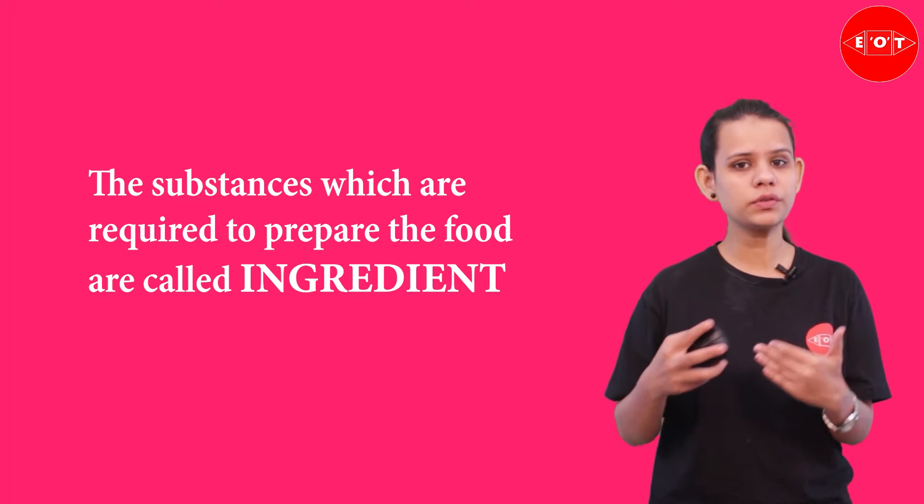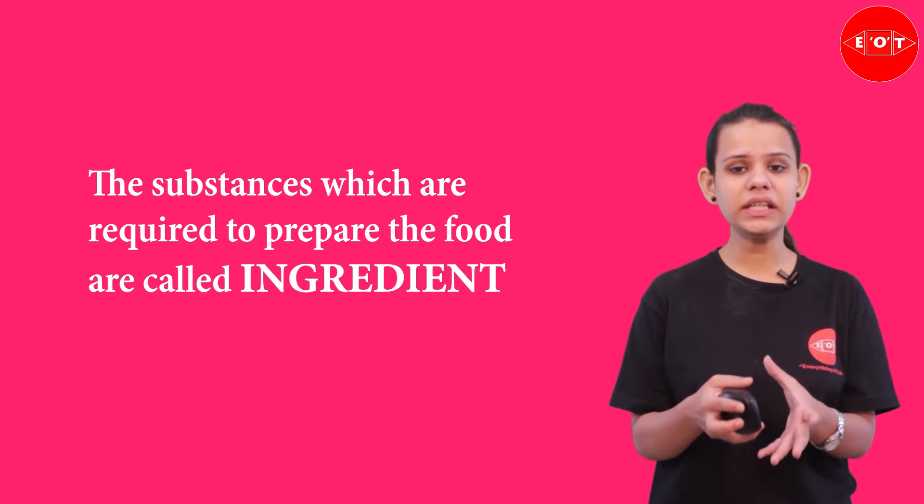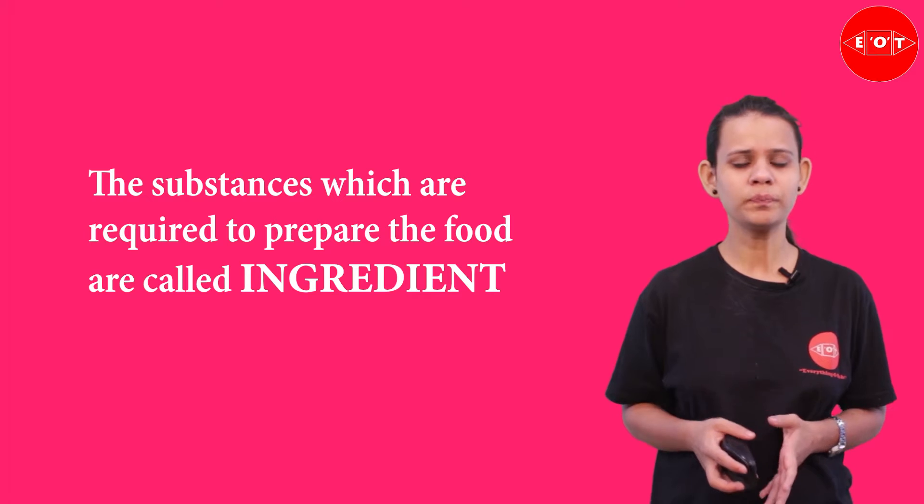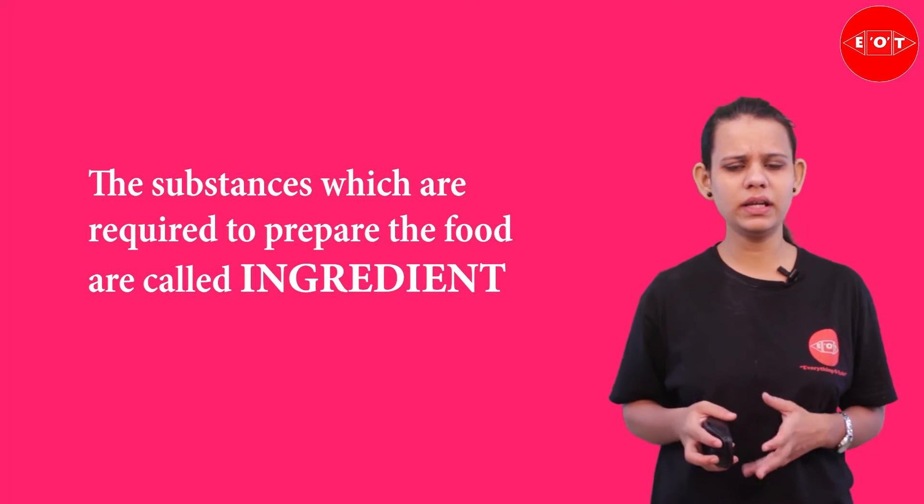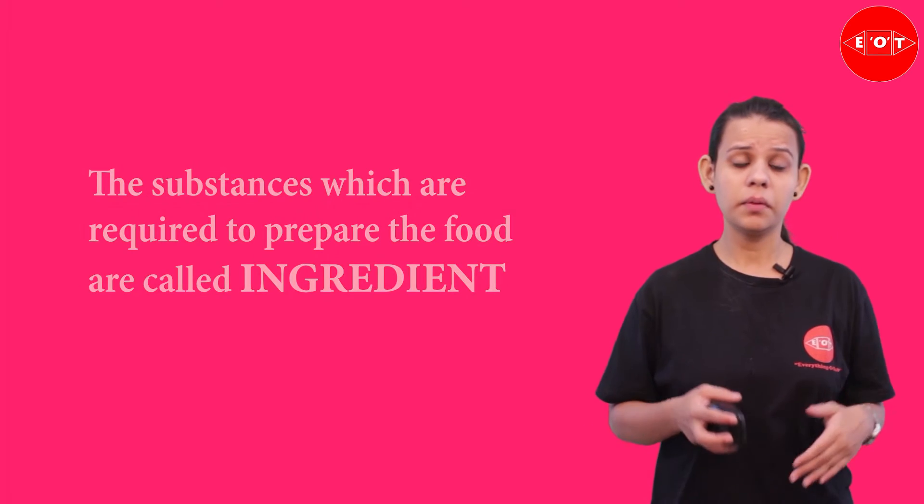Let's take a small example. Think about rice — how do we cook rice? We take some raw rice and boil it in water. So just two materials are required to prepare boiled rice: rice and water. The substances which are required to prepare a food are called ingredients. For preparing rice, we need only two materials.